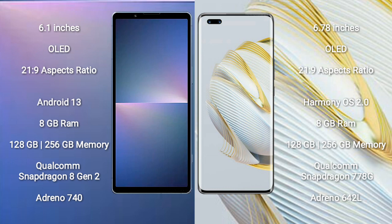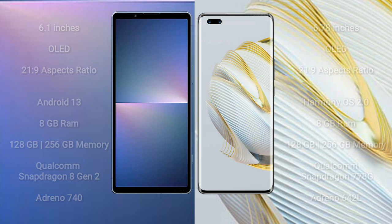The Sony Xperia 5 Mark V comes with 8GB RAM and 128GB to 256GB internal storage, a Qualcomm Snapdragon 8 Gen 2 processor, and an Adreno 740 GPU. The Huawei Nova 10 Pro also comes with 8GB RAM and 128GB to 256GB internal storage, but features a Qualcomm Snapdragon 778G processor and an Adreno 642L GPU.